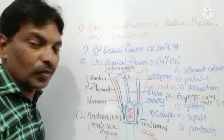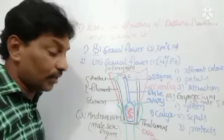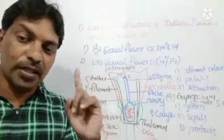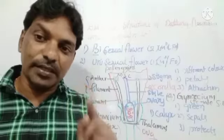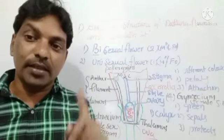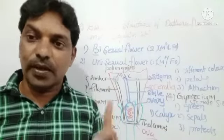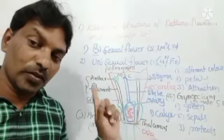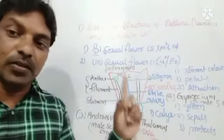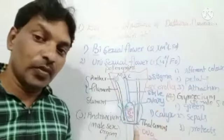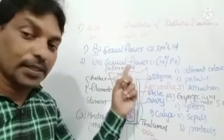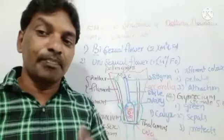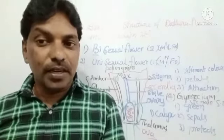Now, what is a unisexual flower? In such flowers, only one of androecium or gynoecium is present. That is called a unisexual flower, and that condition is called sexual dimorphism. Dimorphism means only one sex organ — either male or female — is present. So: unisexual organisms show sexual dimorphism; bisexual organisms show hermaphroditism.